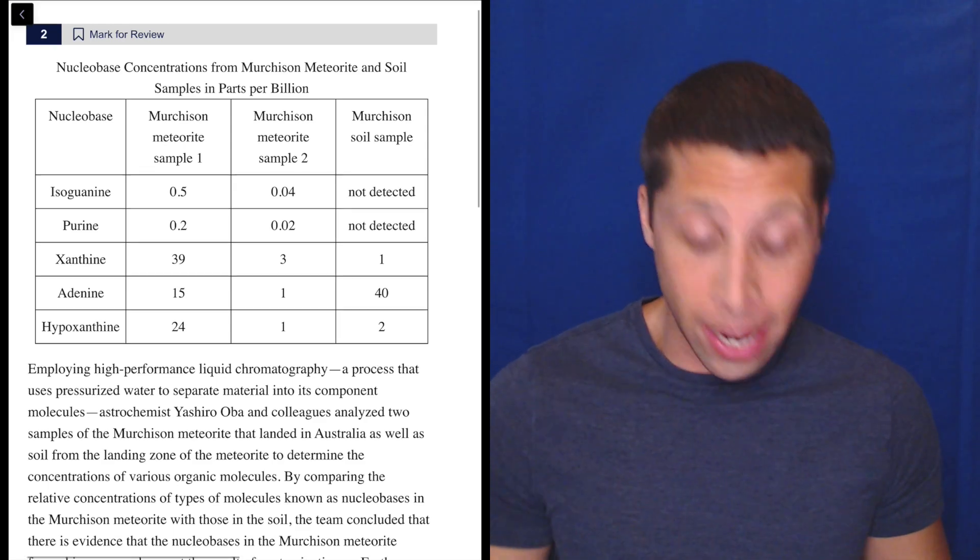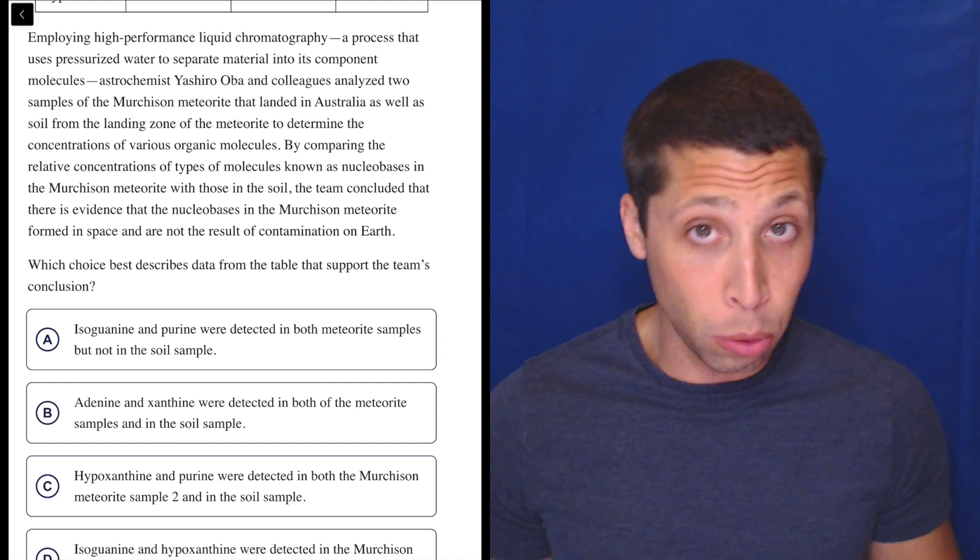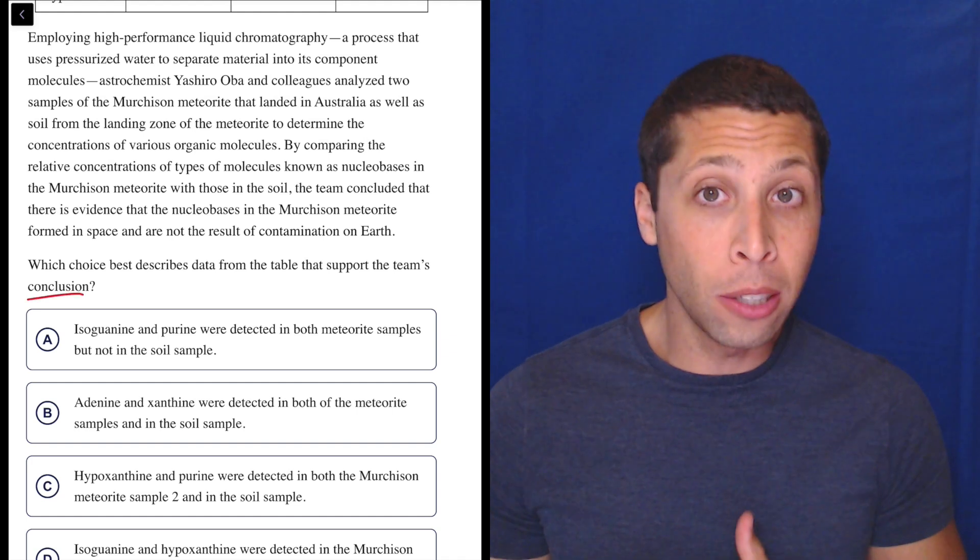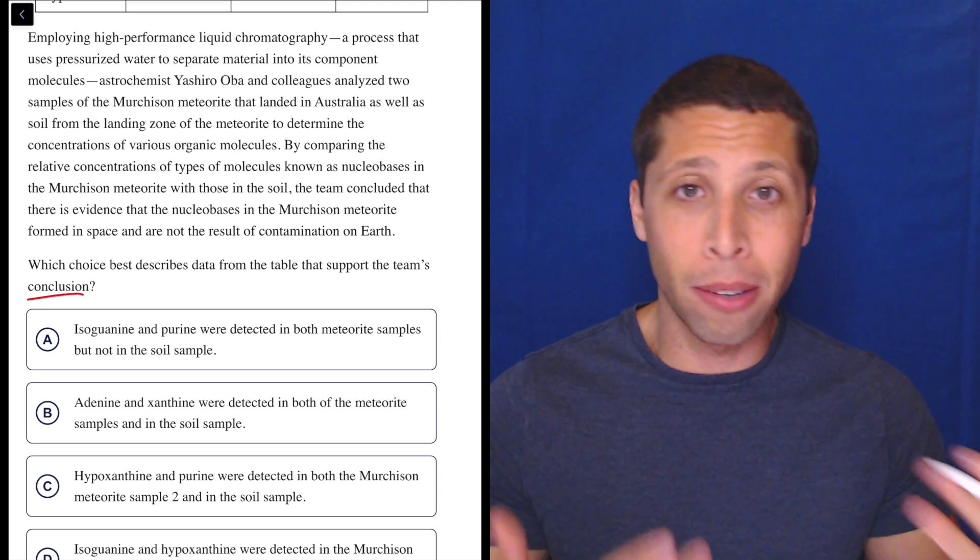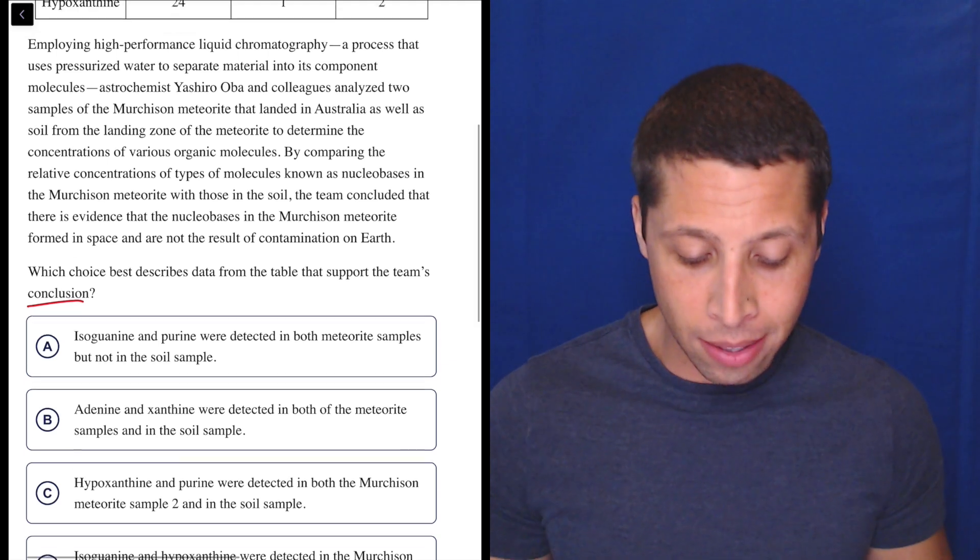Now, the question here is pretty vague and straightforward. Which choice best describes data from the table that supports the team's conclusion? So one thing to note is, as I'm reading this passage, focus on the conclusion. They might give me lots of details about what's going on, but it's the conclusion that probably matters the most. So let's read it and see if we can get anything.